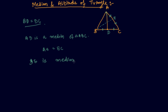I can also draw one more median. There are three sides in a triangle, so there can be three medians — three lines which can divide the triangle into two equal parts. Let's say this point is F, so CF is also a median. I hope you are pretty clear about what is a median of a triangle.